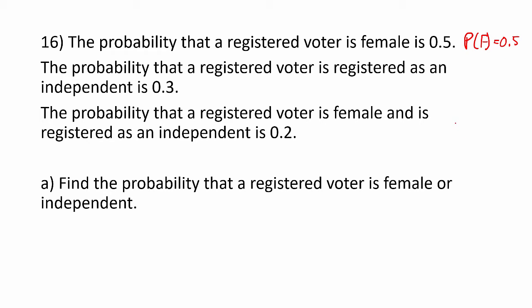The probability that a registered voter is registered as an independent is 0.3. I can write that as probability of I equals 0.3. The probability that a registered voter is female and is registered as an independent is 0.2. That's the probability of F and I, and again, that is 0.2.